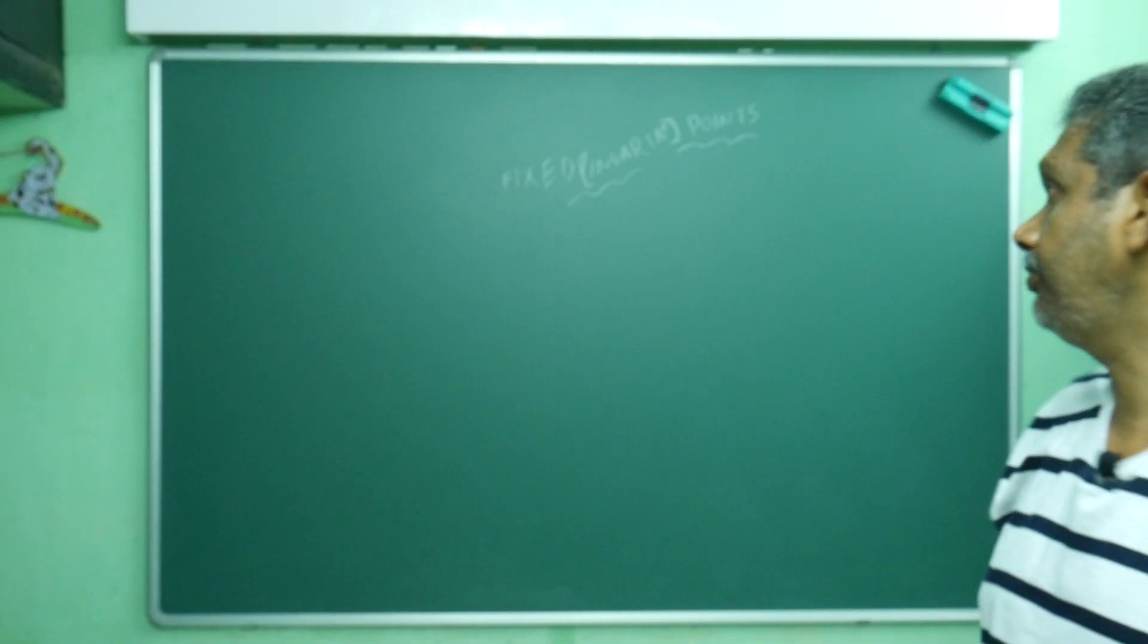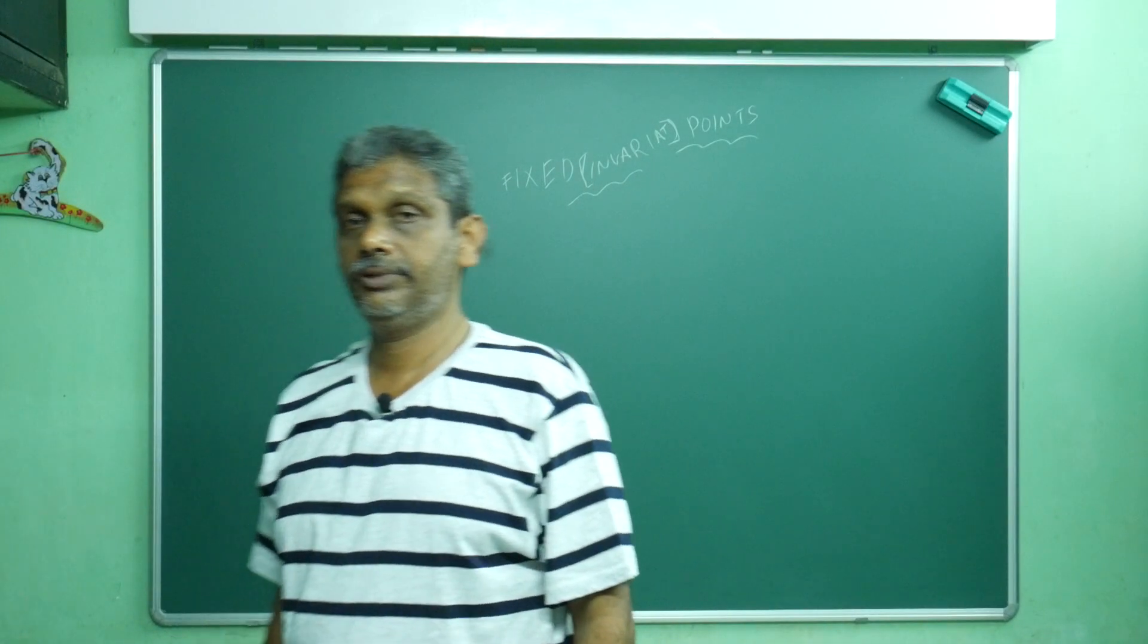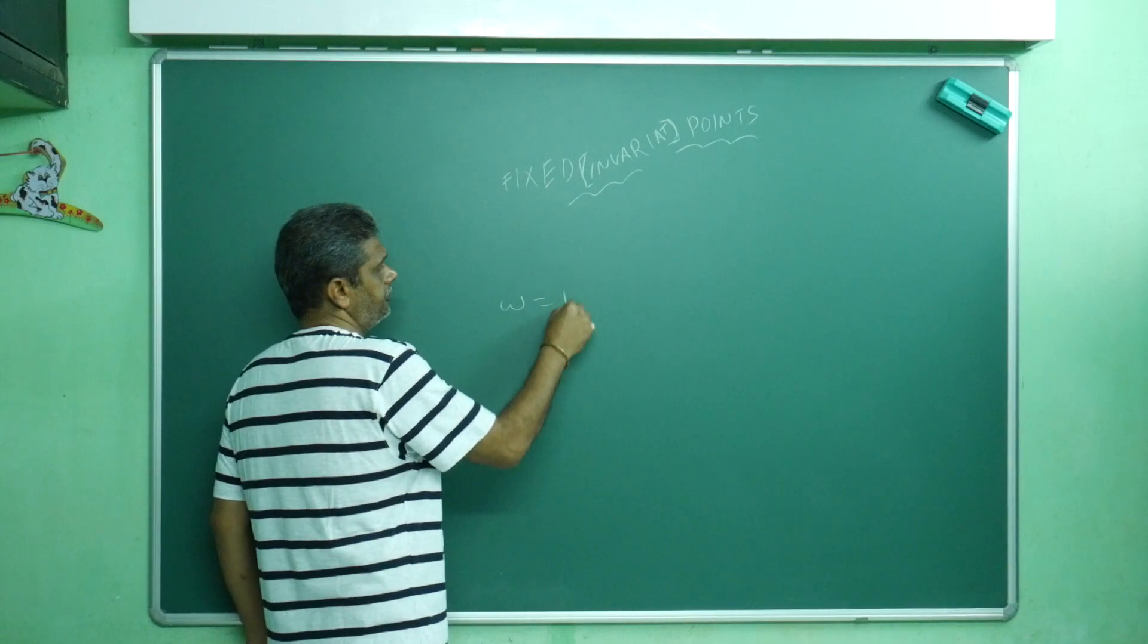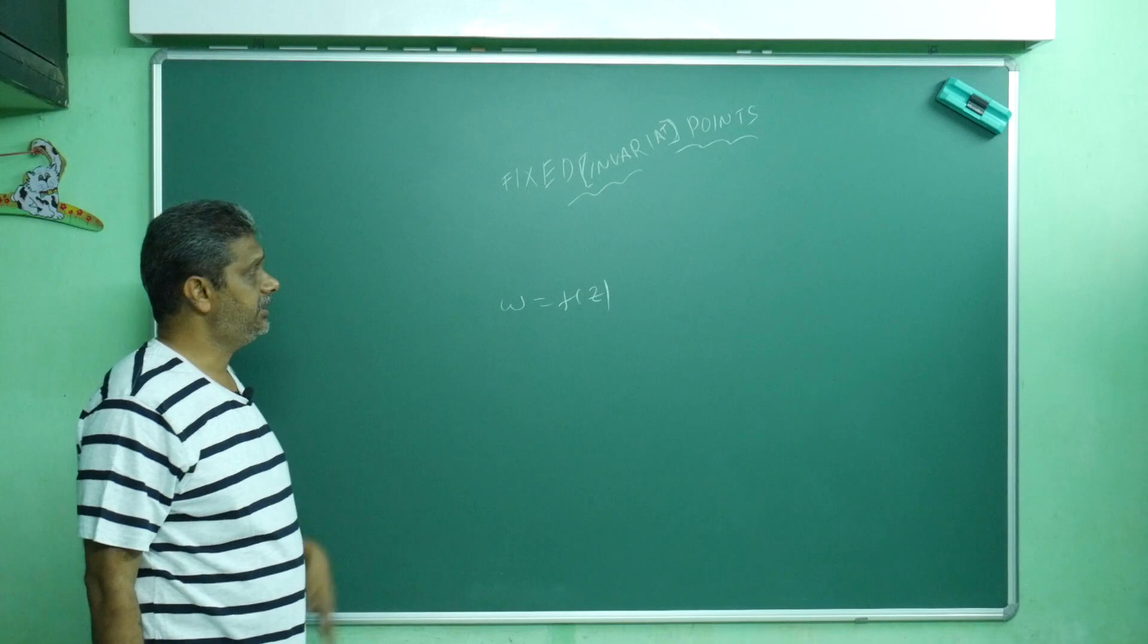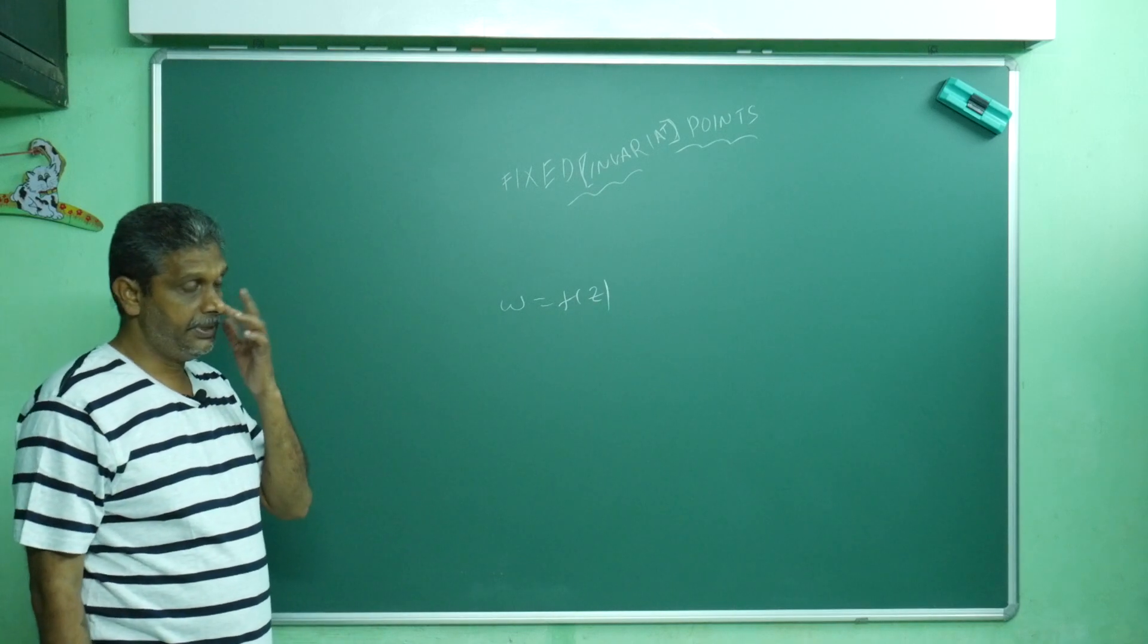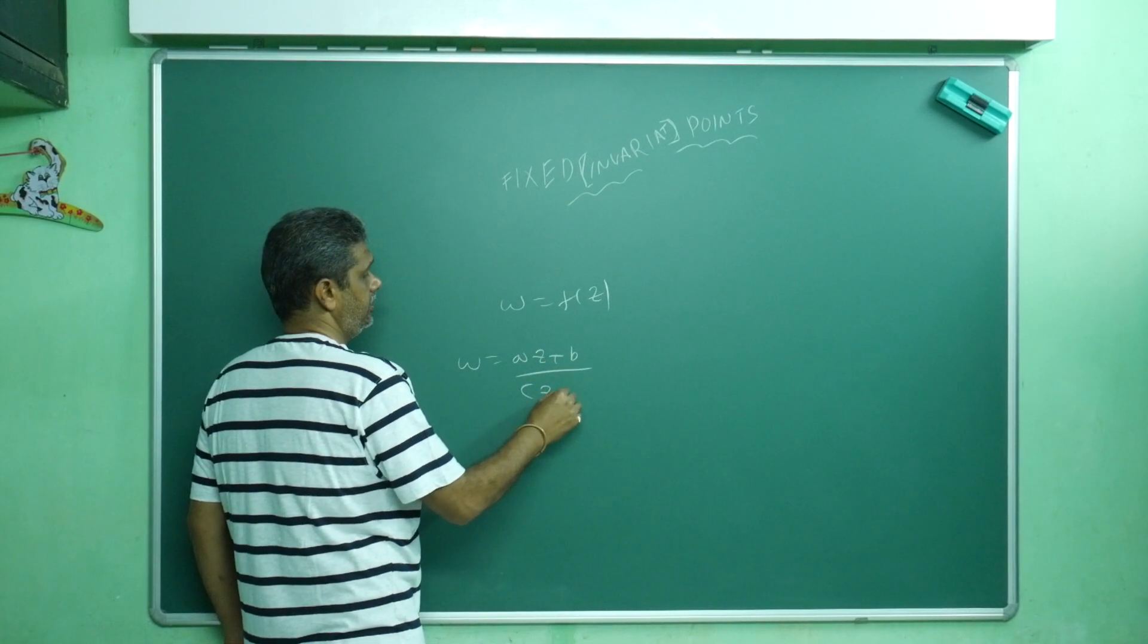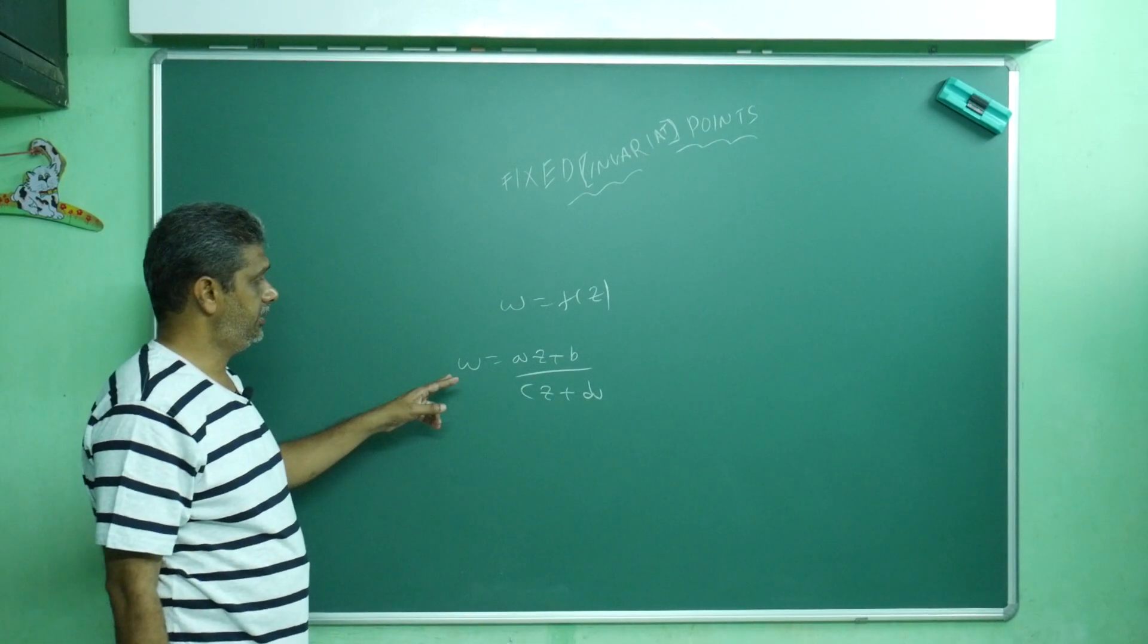Hi friends, this is your doctor BP, also known as doctor Bapu. This is a very important topic: fixed points or invariant points. Suppose w equals f of z is a mapping where the image of z is itself, this is called a fixed point or invariant point. In bilinear transformation, we write w equals az plus b divided by cz plus d. If it is a fixed point...